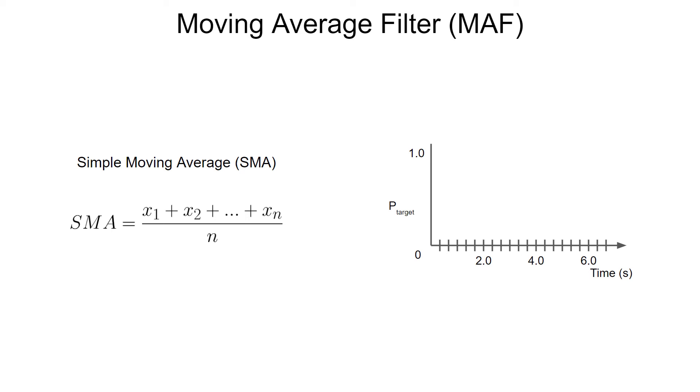This is computed by taking the most recent data point and averaging it with a number of previous data points. Let's say we're looking at the confidence score of our target. In this case, we'll assume we're looking for the keyword stop. Remember that our keyword spotting example on the Arduino gives us probability scores for our labels three times every second. A two point moving average filter would average the most recent confidence score with the one before that.